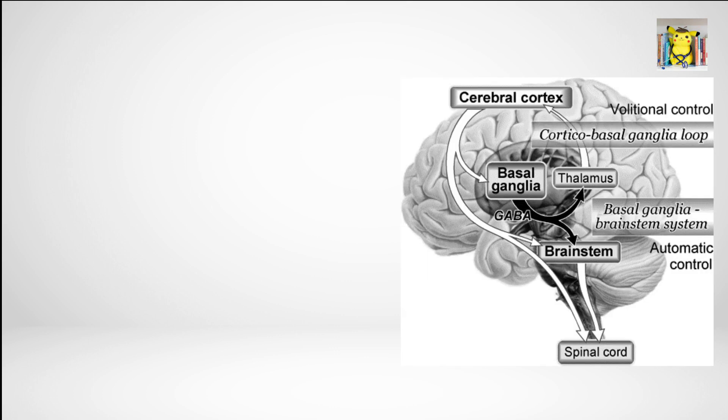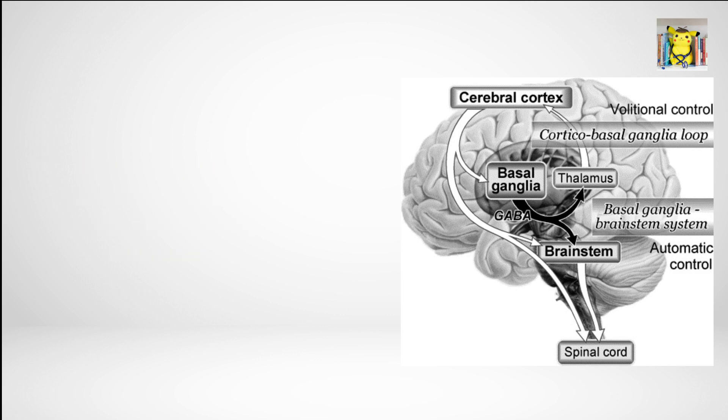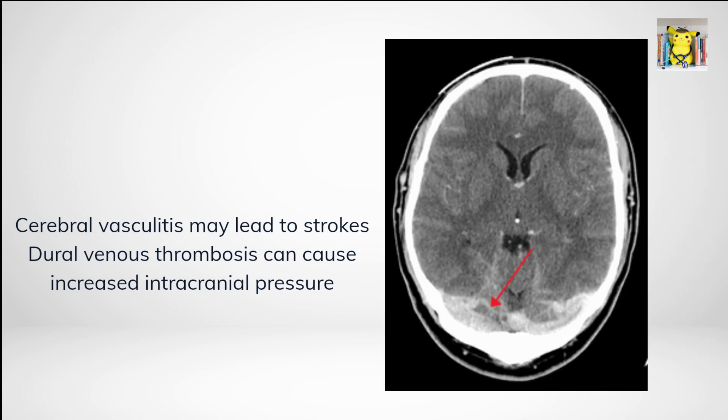Central nervous system involvement appears as chronic meningoencephalitis, affecting the brainstem, basal ganglia, and deep white matter of the hemispheres, causing fever, confusion, headache, impaired speech, balance, and movement. Cerebral vasculitis may lead to strokes, and dural venous thrombosis can cause increased intracranial pressure.